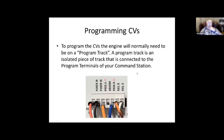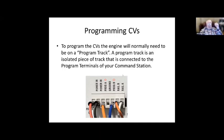To program — I'm not going to get into the specifics, but I will give you some general information. To program CVs, the engine will normally need to be on what we call a program track. A program track is an isolated piece of track connected to the program terminals of your command station. This is a picture of the DS 100 or 200 Digitrax command station, and you can see Prog A and Prog B — those are the two terminals you'd connect to your program track.